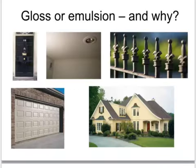Looking at these pictures — would you use a gloss or oil paint, or would you use an emulsion? This front door would be a gloss or oil paint, as would the railings and the garage door, whereas for the ceiling and wall of a room you would use emulsion, as you would use an outdoor emulsion for the outside of a house.